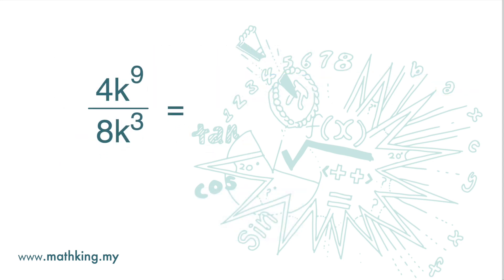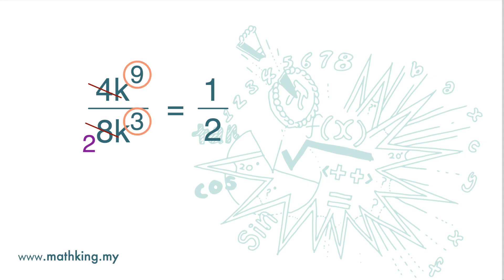This is an easy one: 4k to the power of 9 over 8k to the power of 3. First we simplify the numbers by dividing both by 4, so we get 1 over 2. Then for k to the power of 9 divided by k to the power of 3, we subtract the indices: 9 minus 3. So we get 1 over 2 times k to the power of 6.